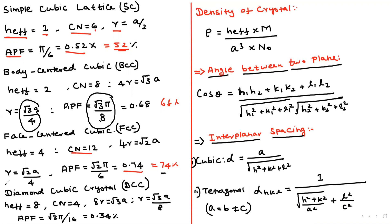Diamond is very important. For diamond, the formula is 8R = √3·a, and the atomic packing fraction is 34%. So the ranking of APF from maximum to minimum is: FCC (74%) > BCC (68%) > SC (52%) > diamond (34%).